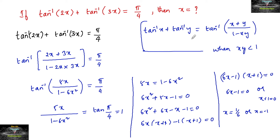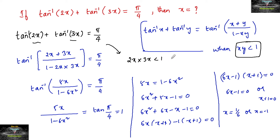But as per our condition, tan inverse x plus tan inverse y equals tan inverse of x plus y upon 1 minus xy only when xy is less than 1. So here, 2x into 3x must be less than 1, that is 6x squared should be less than 1, or x squared should be less than 1 by 6. When x is equal to minus 1, 6 times 1 squared equals 6, which is not less than 1, so that condition is not satisfied.